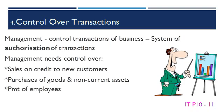In order for management to have control of the transactions of a business, there needs to be a system of authorization of transactions. Management doesn't always have the time to personally oversee all the transactions of the business, so transactions need to be authorized. Management needs control over the following areas: sales on credit to new customers — it needs to be fairly sure that the new customer will pay for the goods; purchases of goods and non-current assets — a large expense that needs to be authorized; and payment of employees — one of the largest expenses in a business is salaries and wages, so it must be ensured that all employees being paid actually work for the business and have worked the hours they are being paid for.